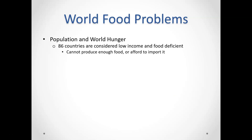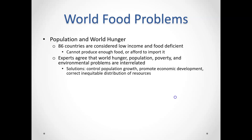There are about 86 countries that are considered food deficient. Food deficient means these countries cannot produce the food that they need, so they have to bring food in — and typically these countries can't afford to import it because they tend to be poorer nations. Hunger, population, poverty, and environmental problems are all interrelated with each other.